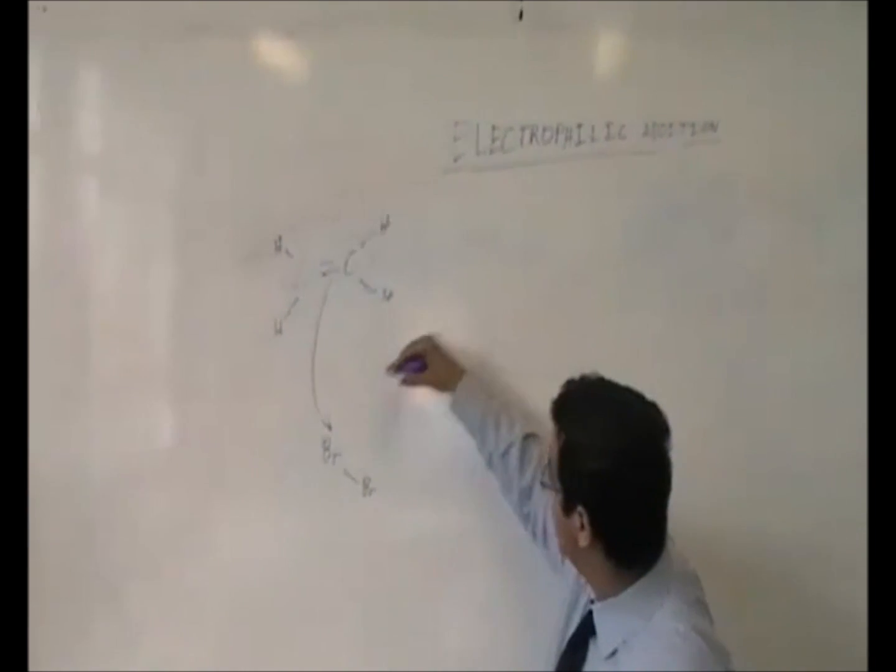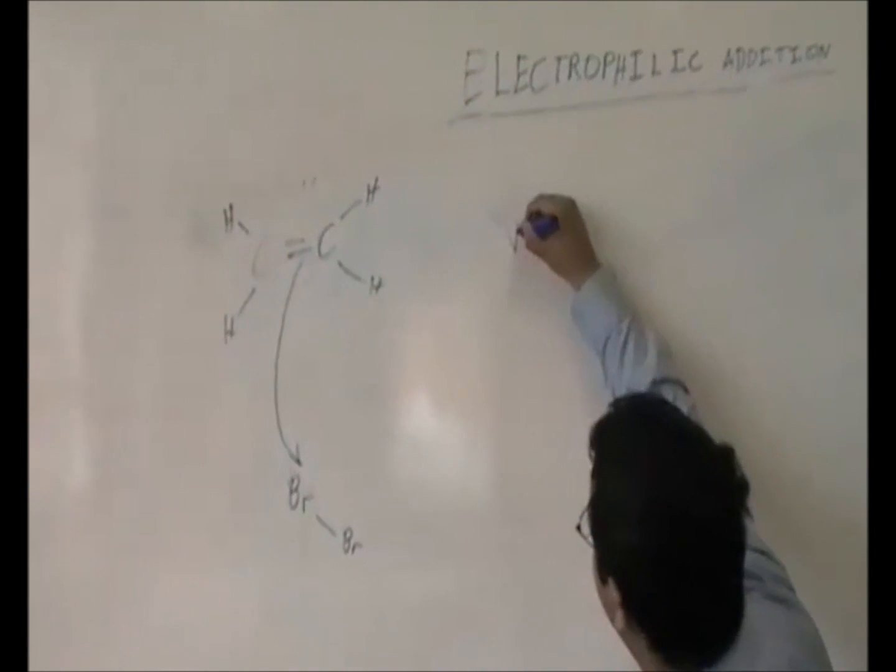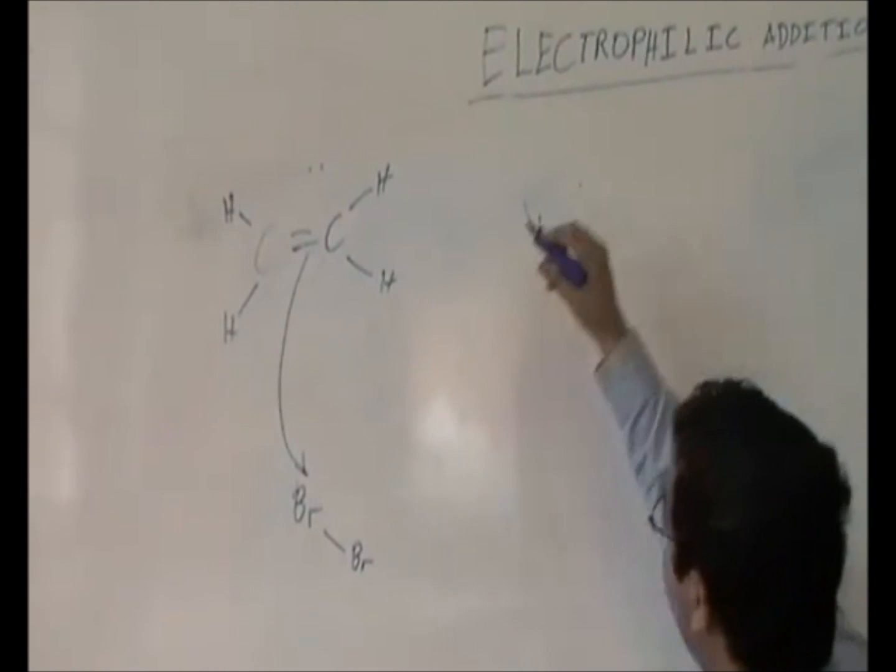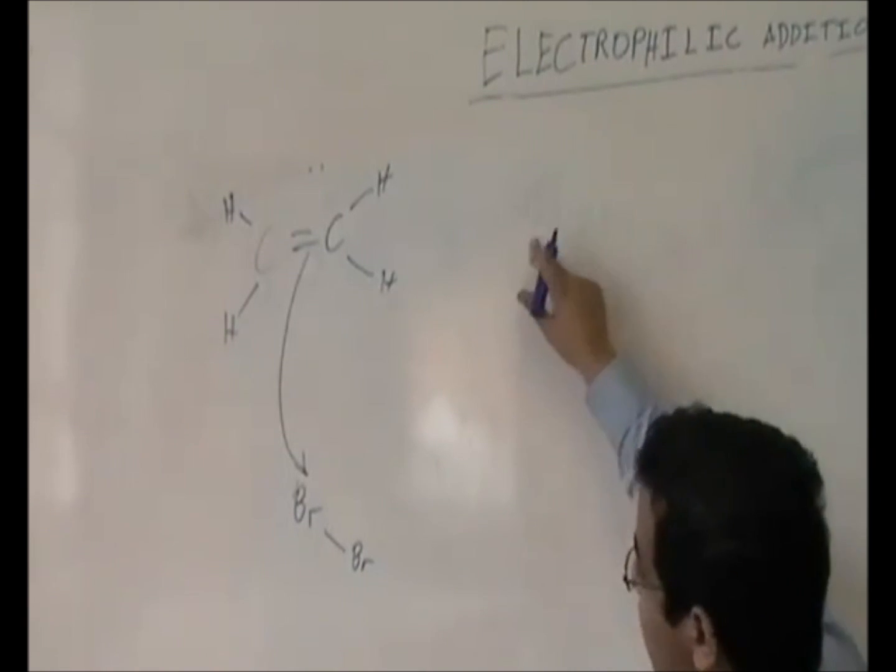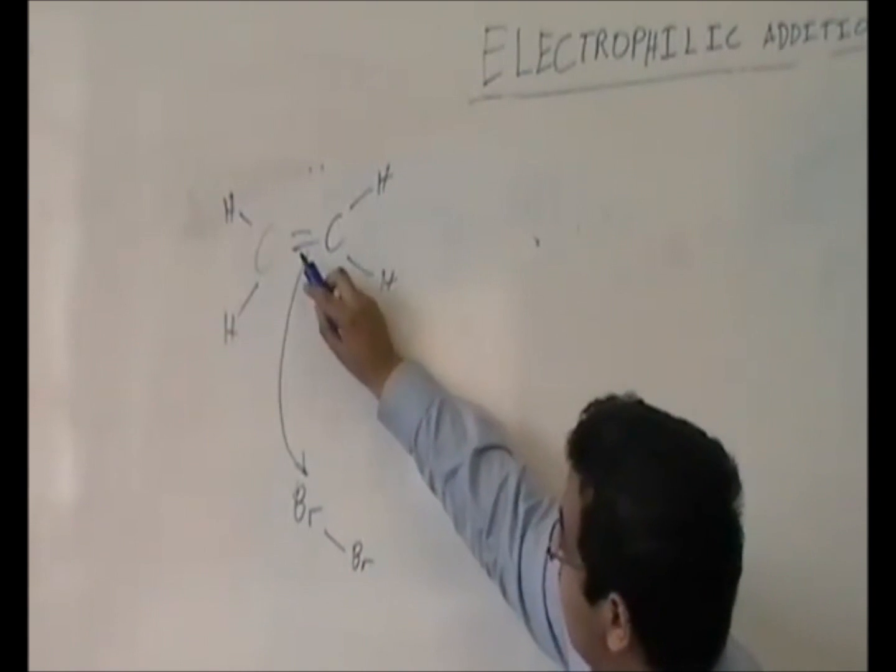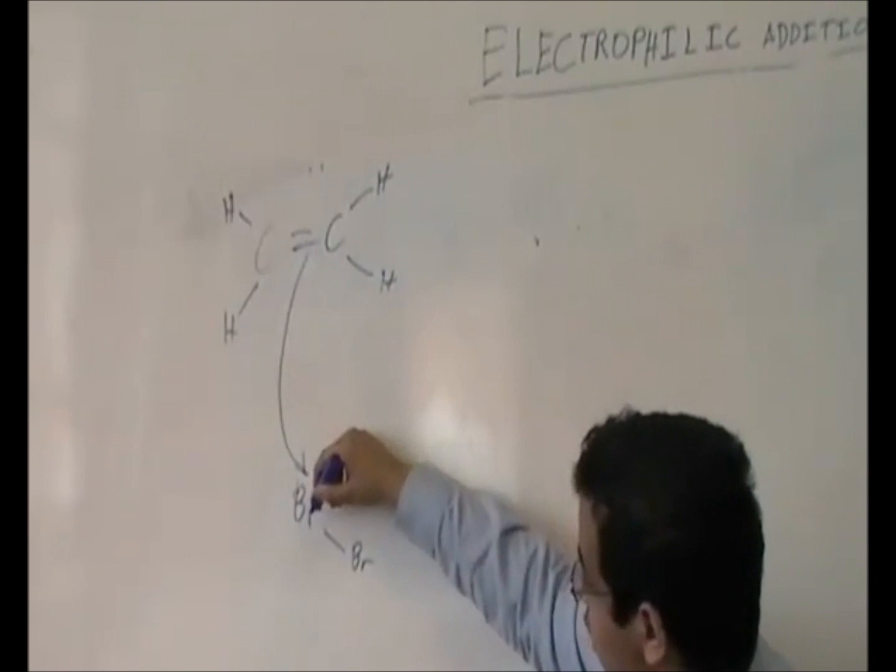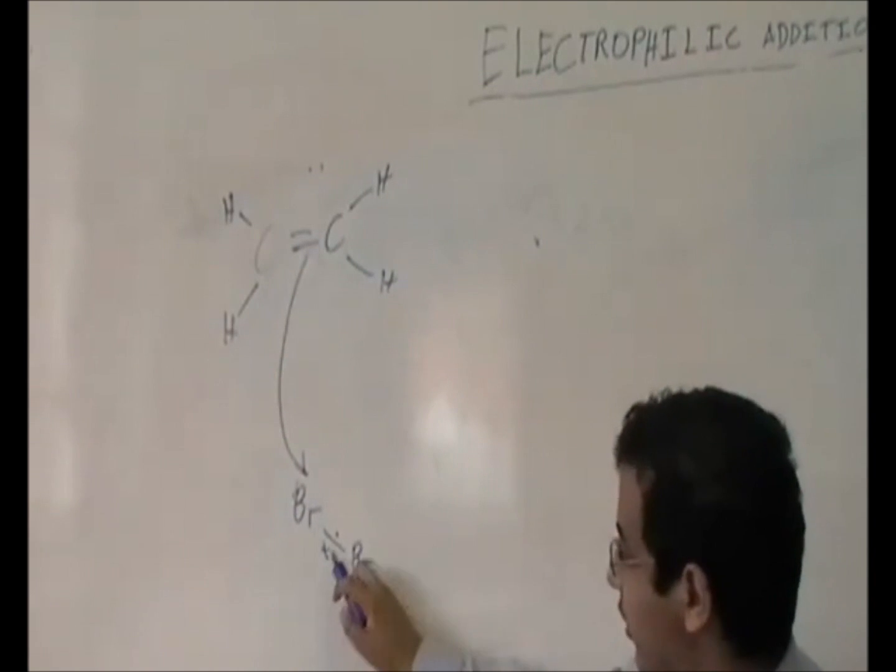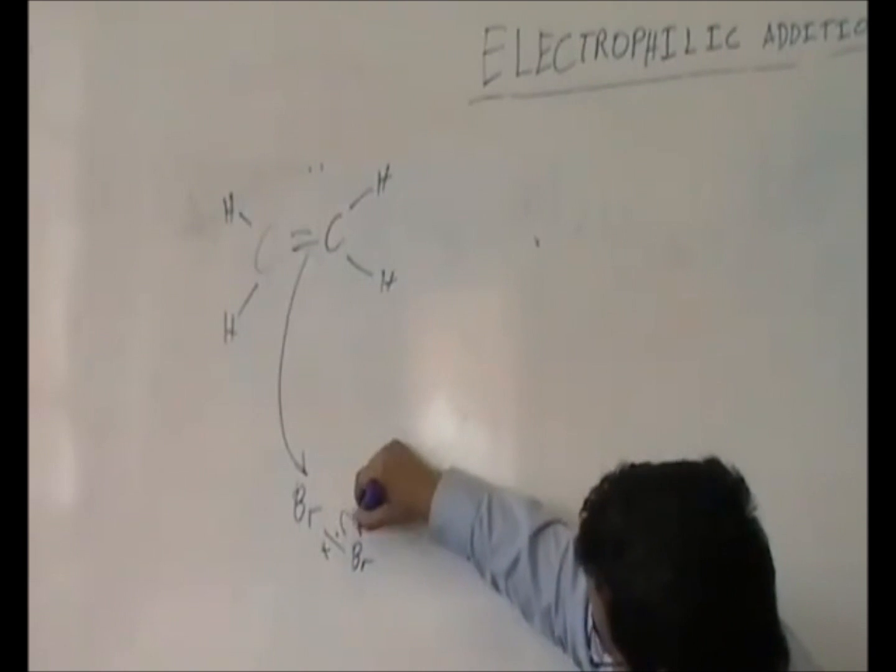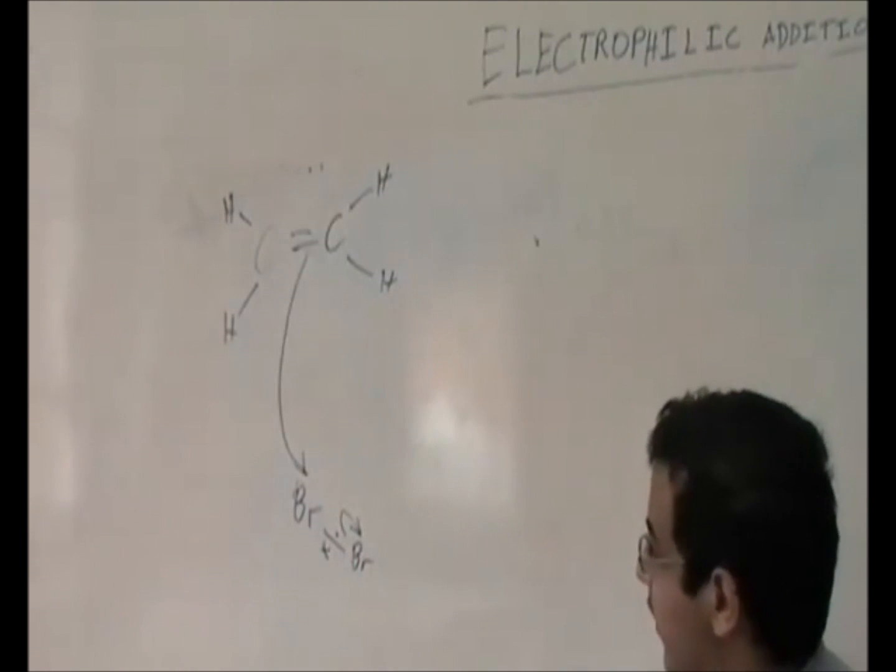I use a double pronged arrow because a single pronged arrow shows the movement of one electron, however I want to show movement of two, so I use two prongs. Because the electrons have moved to this bromine, the electrons that were in this bond denoted by the cross and dot are moved to this bromine, again a pair of electrons moving.